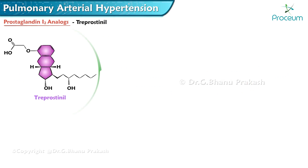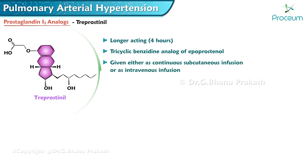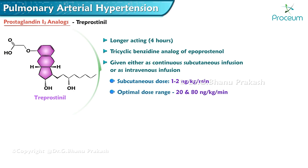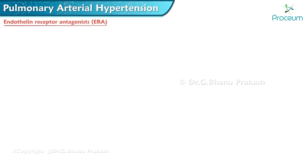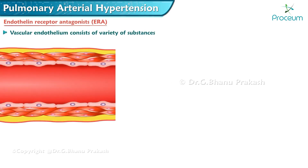Treprostinil is a longer-acting tricyclic benzidine analog of epoprostenol, which can be given either as a continuous subcutaneous infusion or as an intravenous infusion. Subcutaneous doses are started at 1 to 2 nanograms per kilogram per minute, with an optimal dose range of 20 to 80 nanograms per kilogram per minute. Pain at the site of infusion is a commonly known side effect.